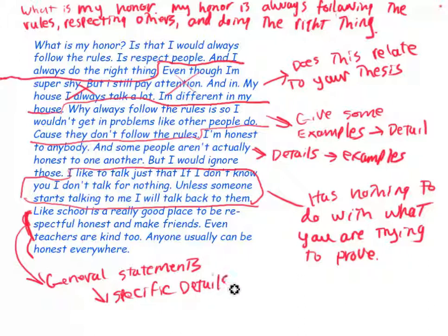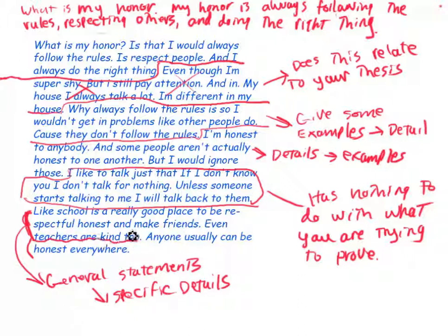You're making broad sweeping statements, and you're trying to prove that you are respectful, that you follow the rules, that you do the right thing. So you need to choose one of those. But don't tell me 'it's a really good place to meet and be respectful' — that doesn't prove that you are doing those things. 'Teachers are kind' — that has nothing to do with you being honest and respectful.